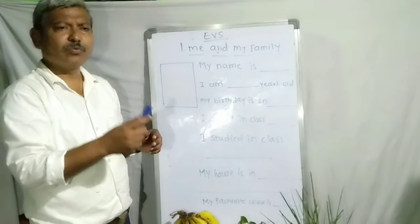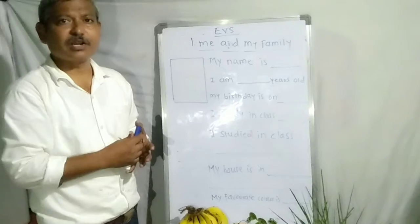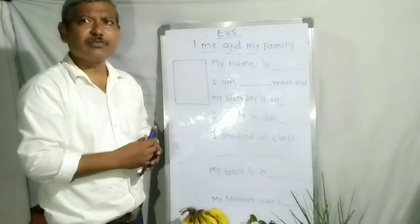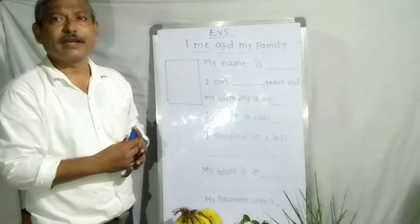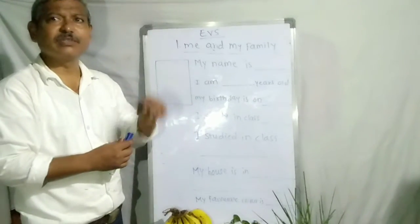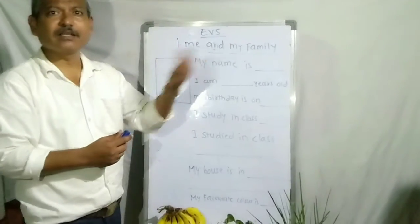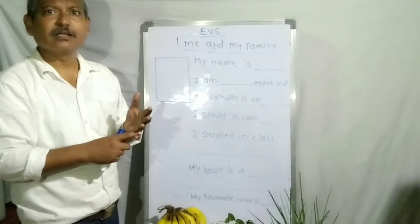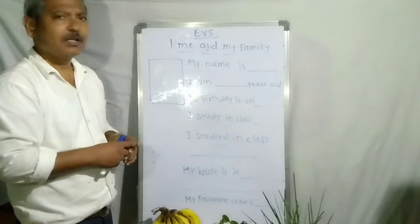So we studied about the surroundings and the most immediate surrounding around us is our house. In our house there are a number of things — some things are living and some things are non-living. Our home has plants and also our brother and sister, our mother, father, brother, grandmother — all these are the living things.